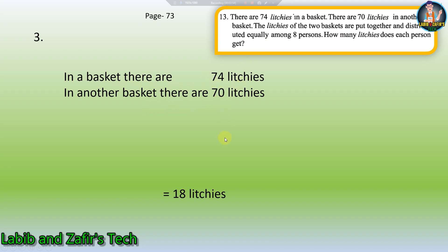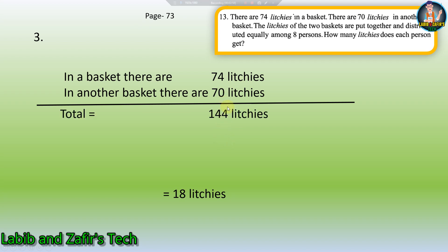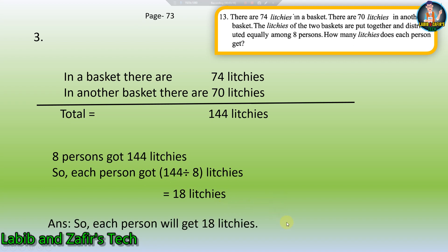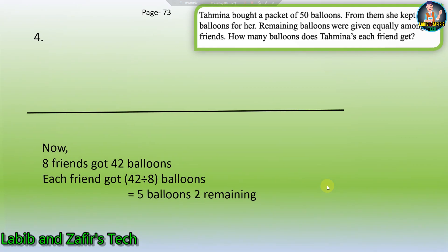In one basket there are 74 leeches and in another basket there are 70 leeches. Adding them together gives 144 leeches total. Eight persons got 144 leeches, so each person gets 144 ÷ 8 = 18 leeches. Each person will get 18 leeches. This is the third word problem.